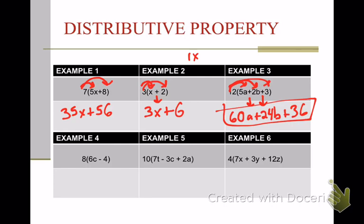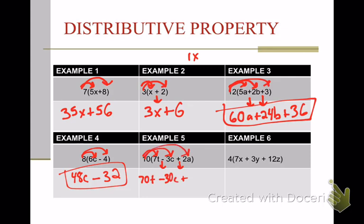Next one. We have 8 times 6c minus 8 times 4. So, in this case, we need a subtraction symbol. 8 times 6 is 48c. And 8 times 4 is 32 minus 32. And that's our answer for this one. Next one. We're going to have a subtraction and we're going to have an adding in this time. Because we have both of these signs. We're going to drop them down. 10 times 7t is 70t. 10 times 3c is 30c. And 10 times 2a is 20a. None of those are like terms. So, there we go. Now we're done. So, our answer is 70t minus 30c plus 20a.